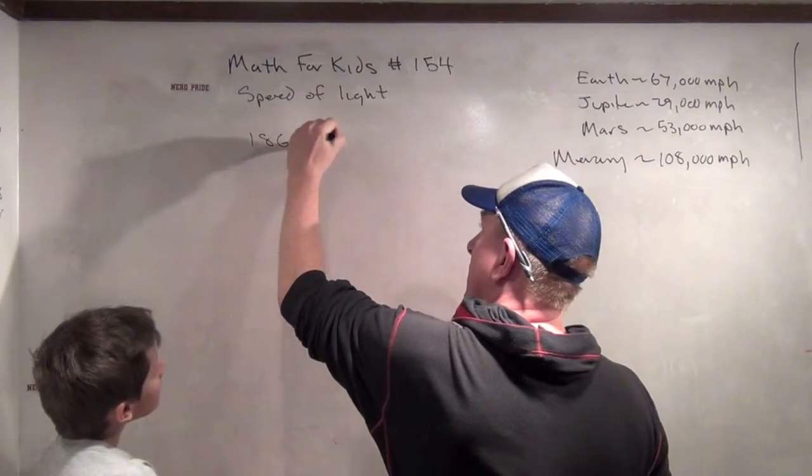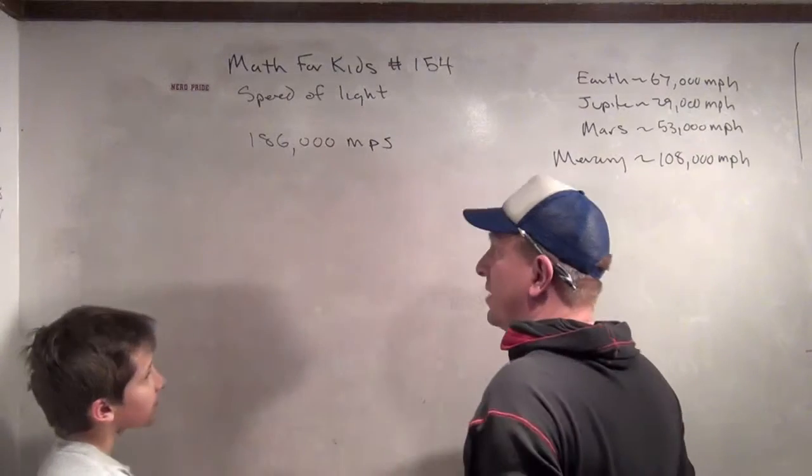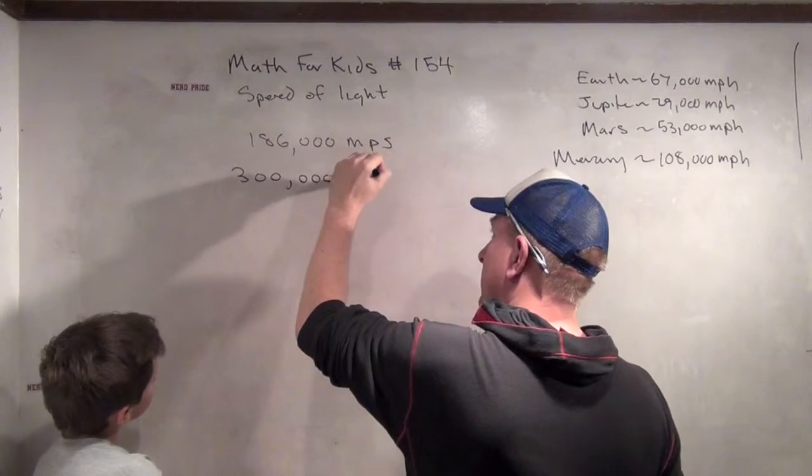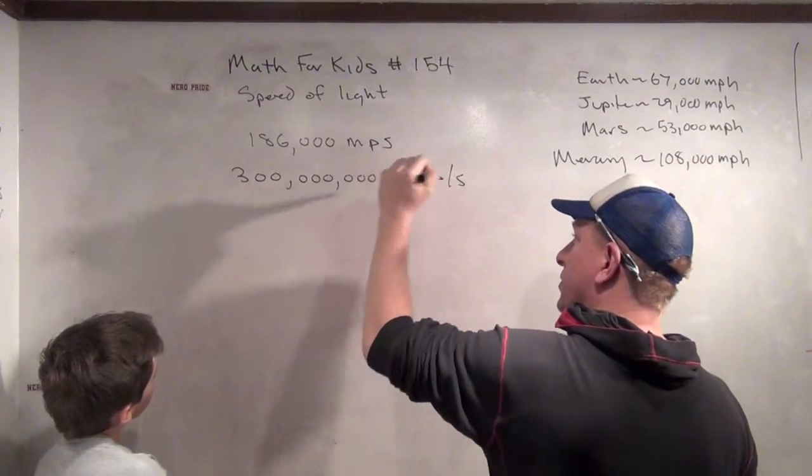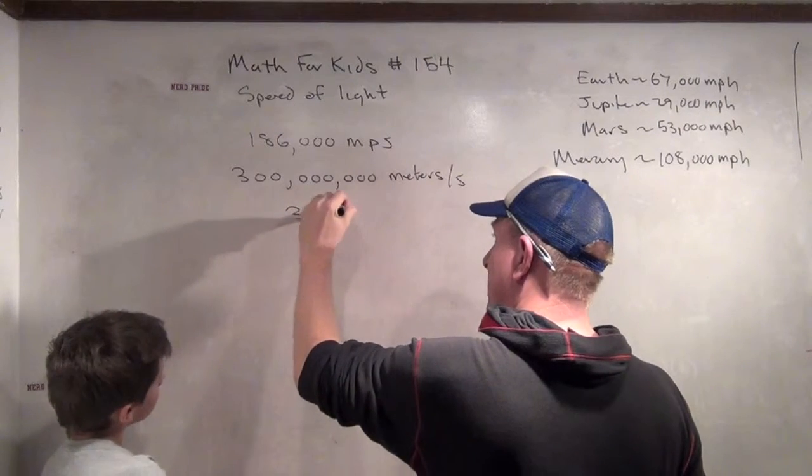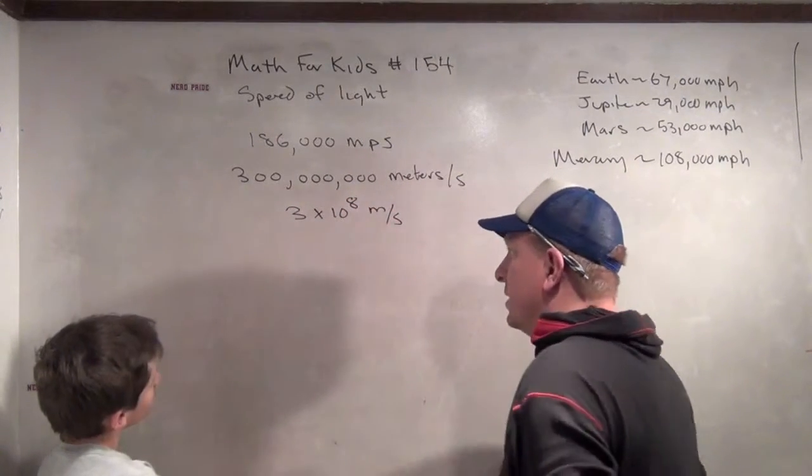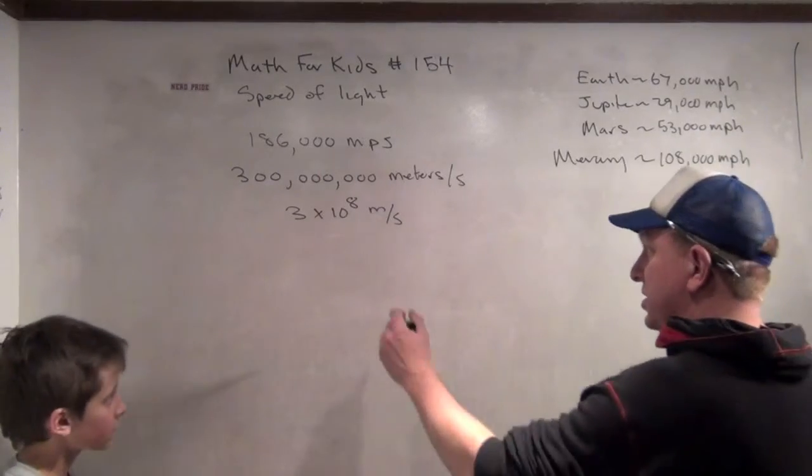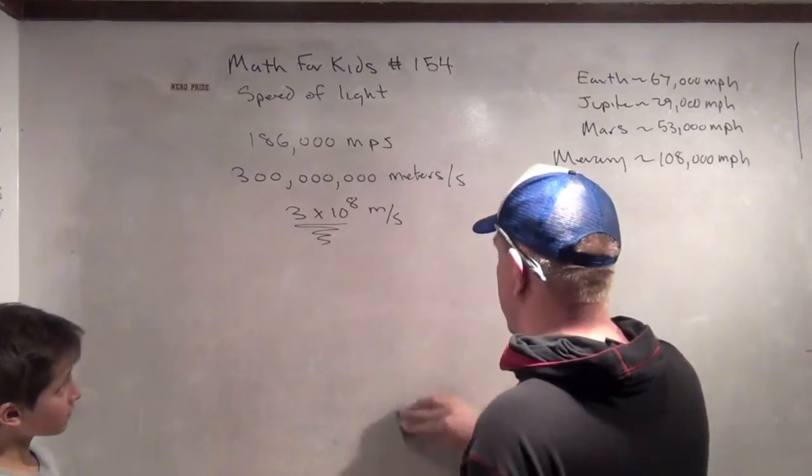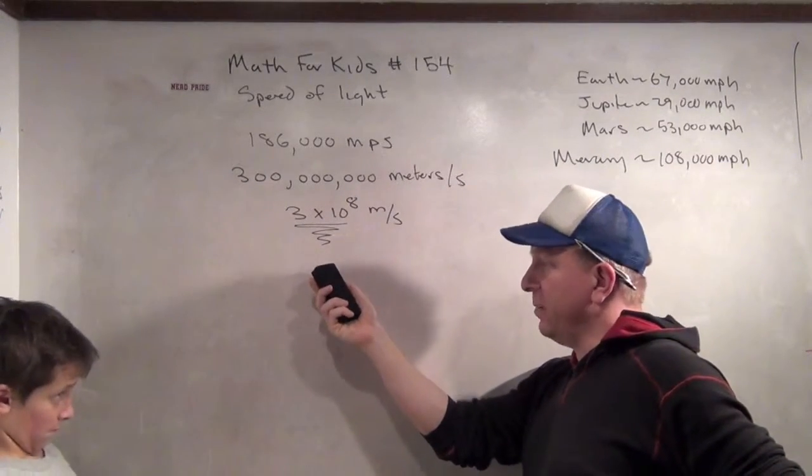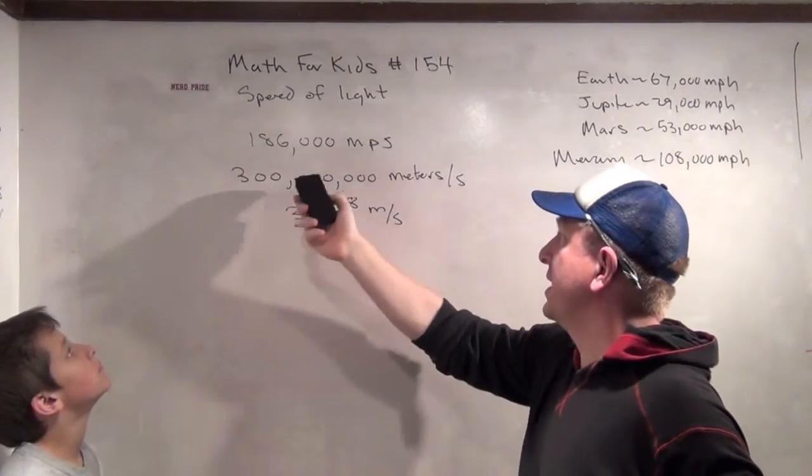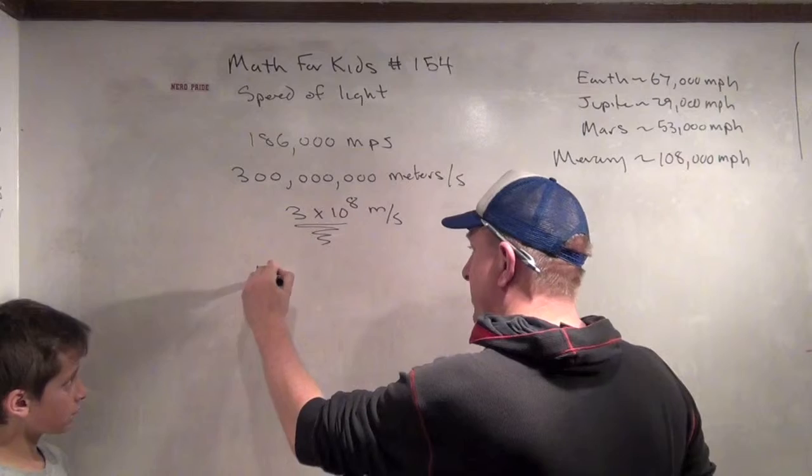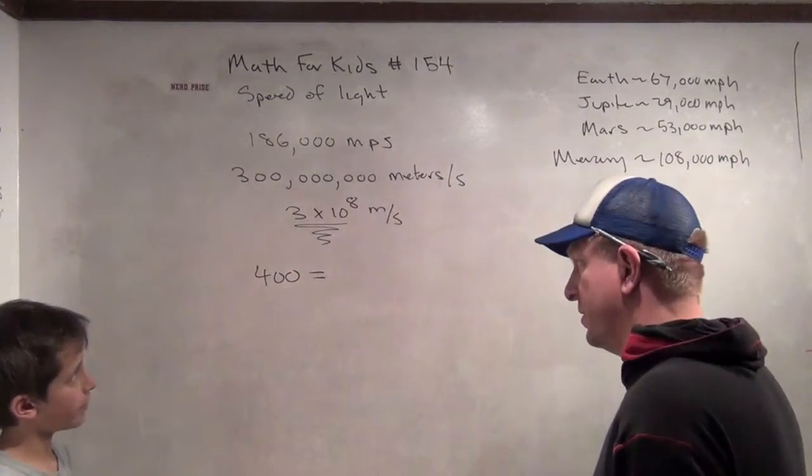Okay. 186,000 miles per second, not miles per hour, which is also 300,000 meters per second. Or we sometimes write this as 3 times 10 to the 8th meters per second. Have you ever seen this written this way before? 3 times 10 to the 8th meters per second? Okay, that's called scientific notation. We haven't actually talked about that, but it's not too hard to understand. It just means, with scientific notation, it means people don't like writing out all these zeros. So, they just say 3 times 10 to the 8th. For example, what would this number be in scientific notation?